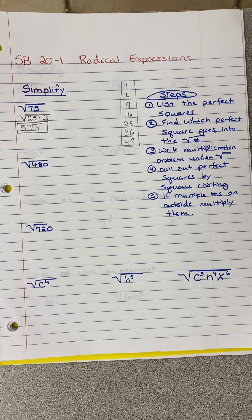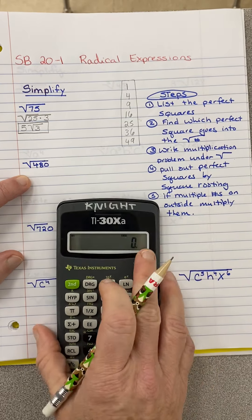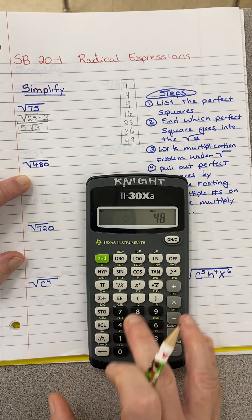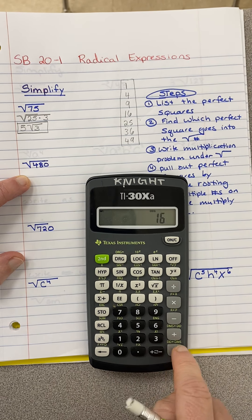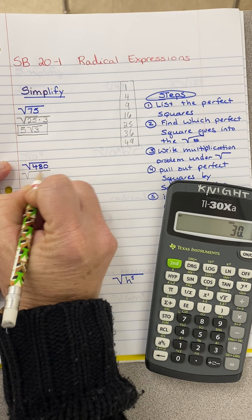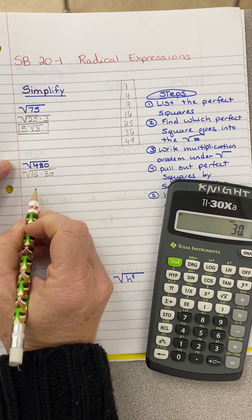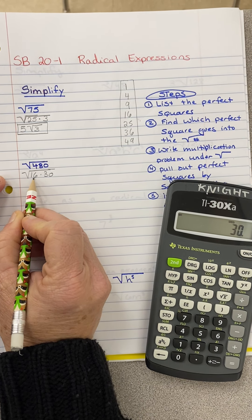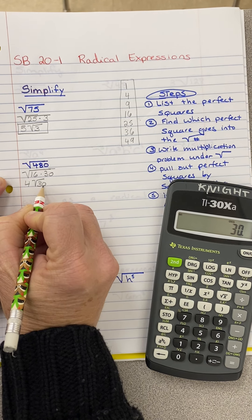I look at the number 480. Once again, I'm looking at my perfect squares. I'm saying what perfect square goes into 480. Now I can start small. I'm going to try 16. Does 16 go into it? Yeah. 16 times 30. So I'm going to say 16 times 30. And then the square root of 16 is 4. So that pops out.